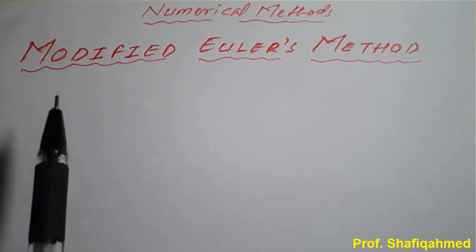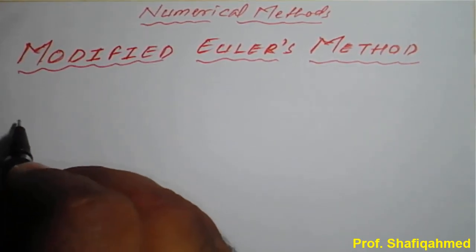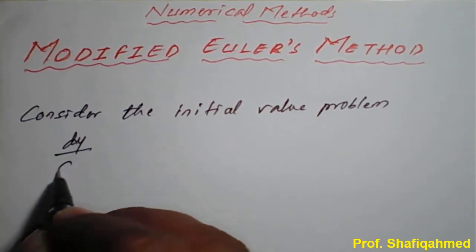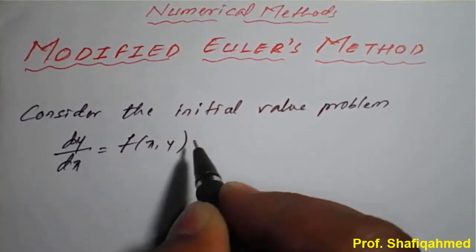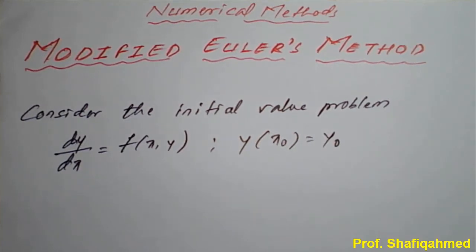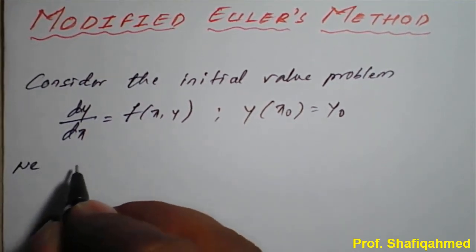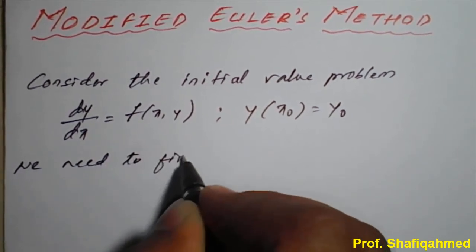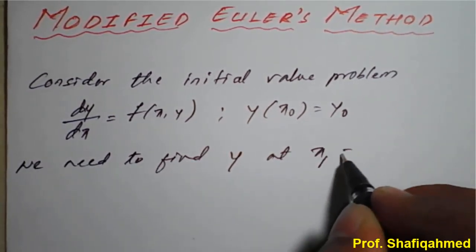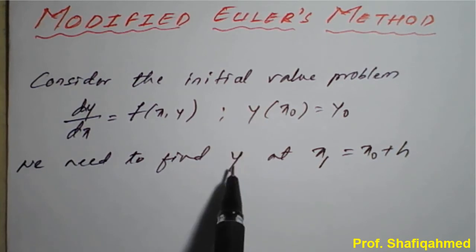In Modified Euler's Method, we consider the initial value problem: dy/dx = f(x, y), and y(x₀) = y₀, as we have seen in Taylor's Series Method. We need to find y at x₁, where x₁ is nothing but x₀ + h. So we need to find y(x₁).